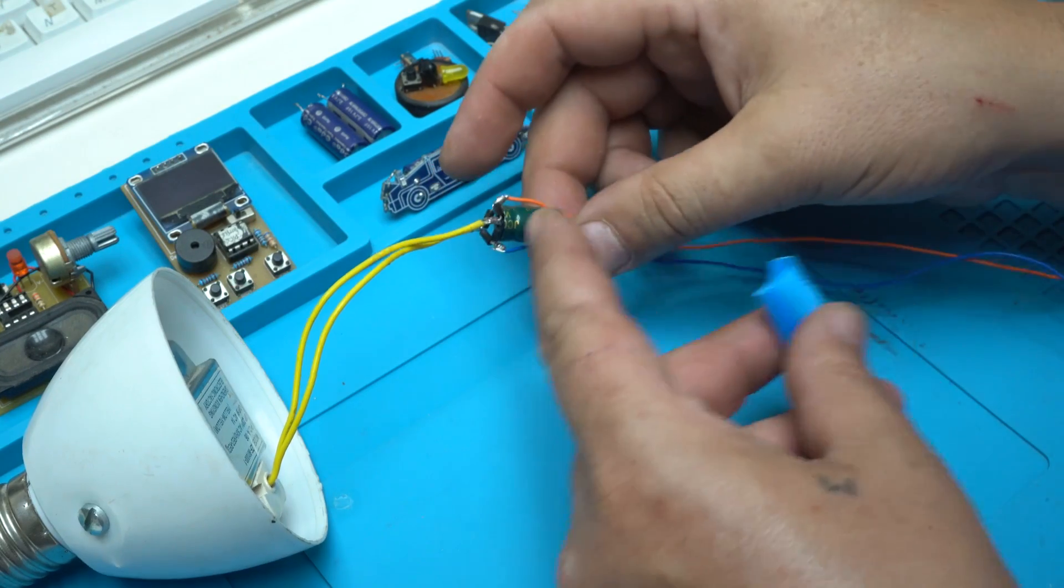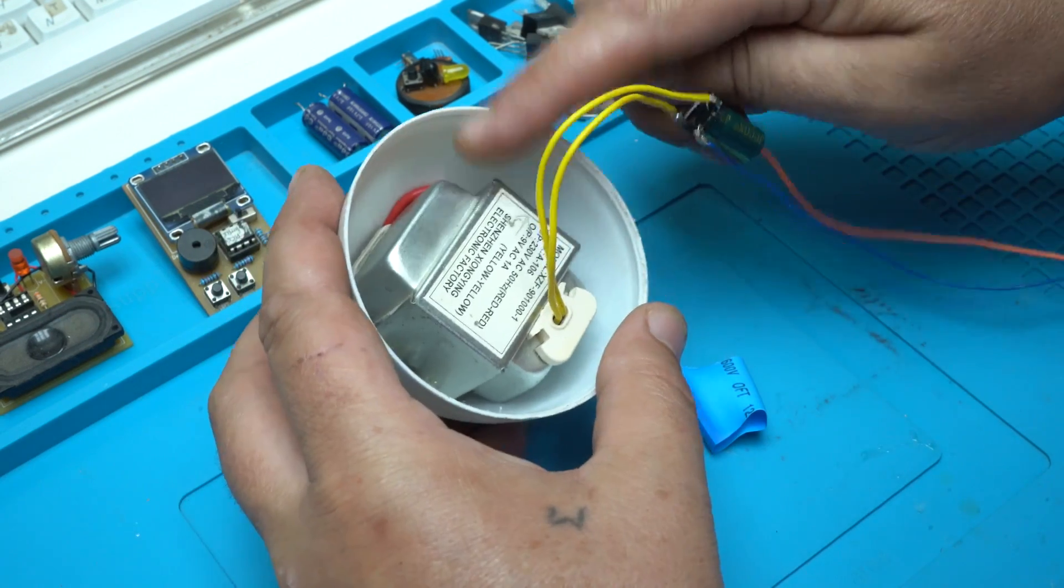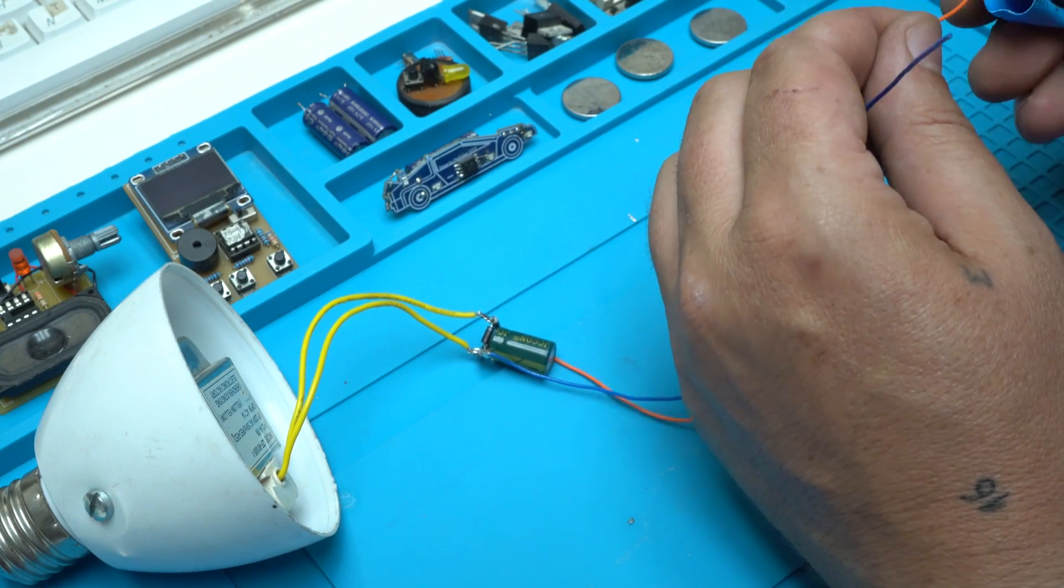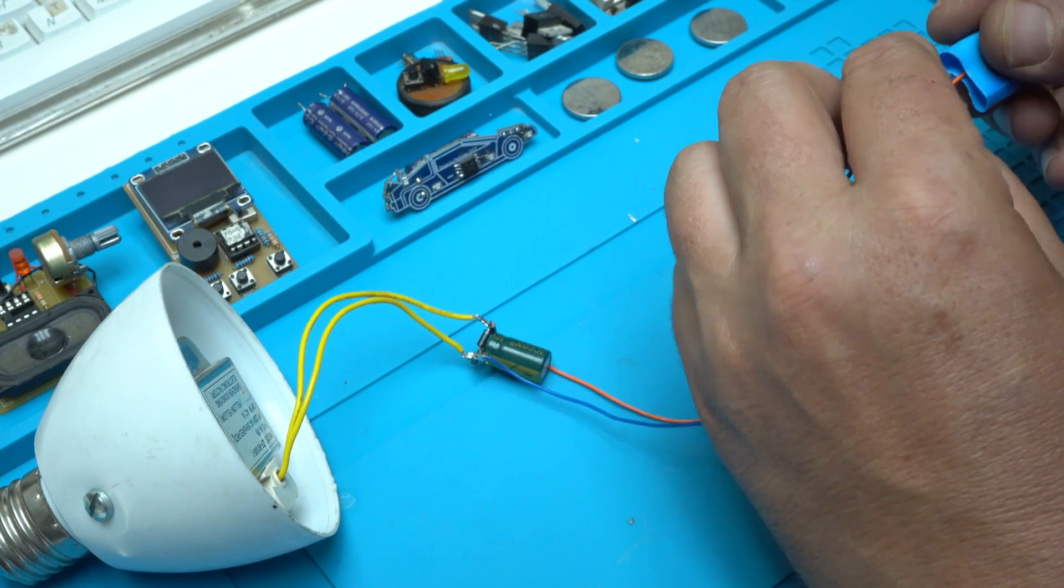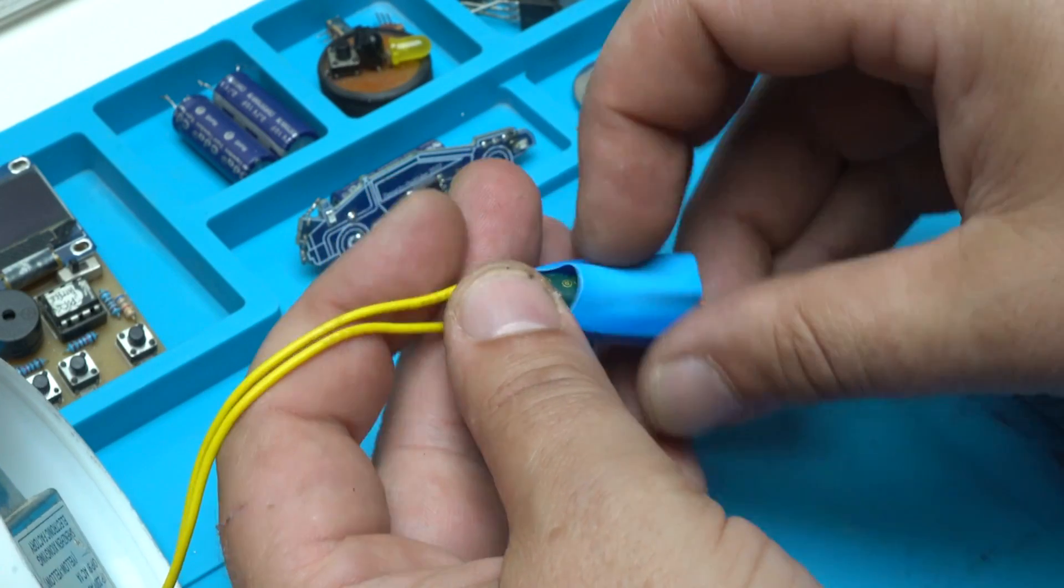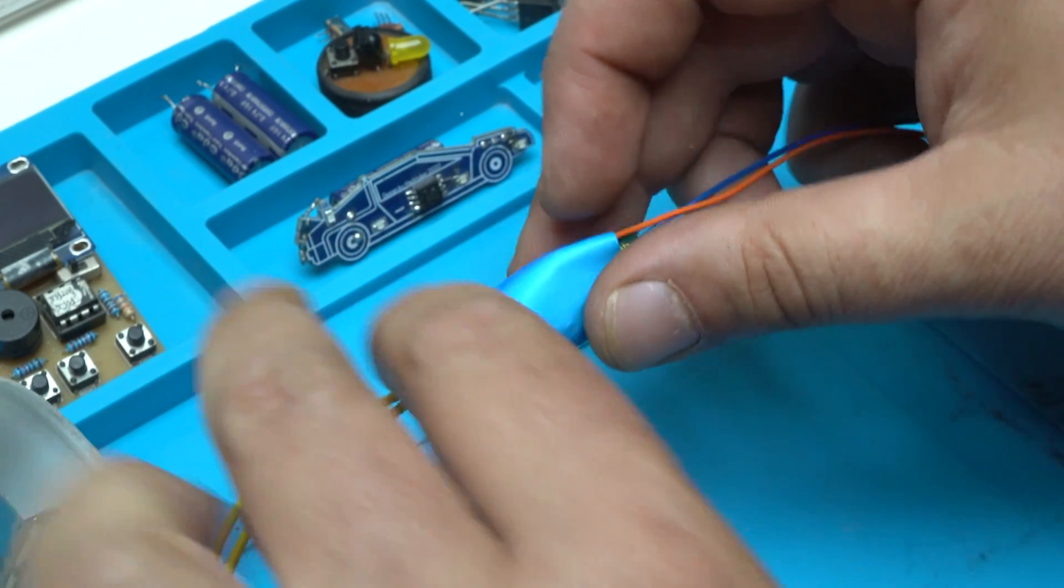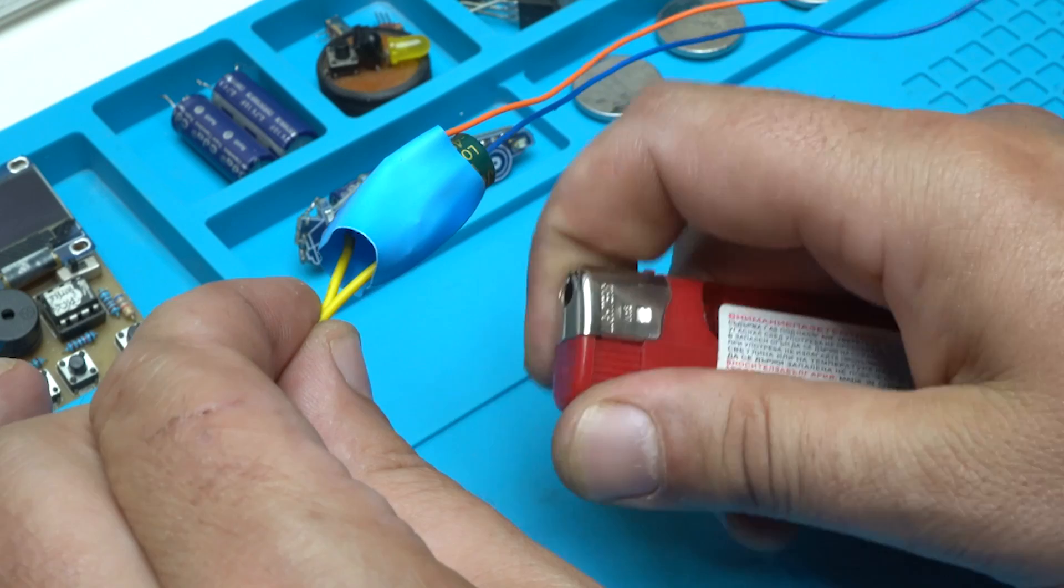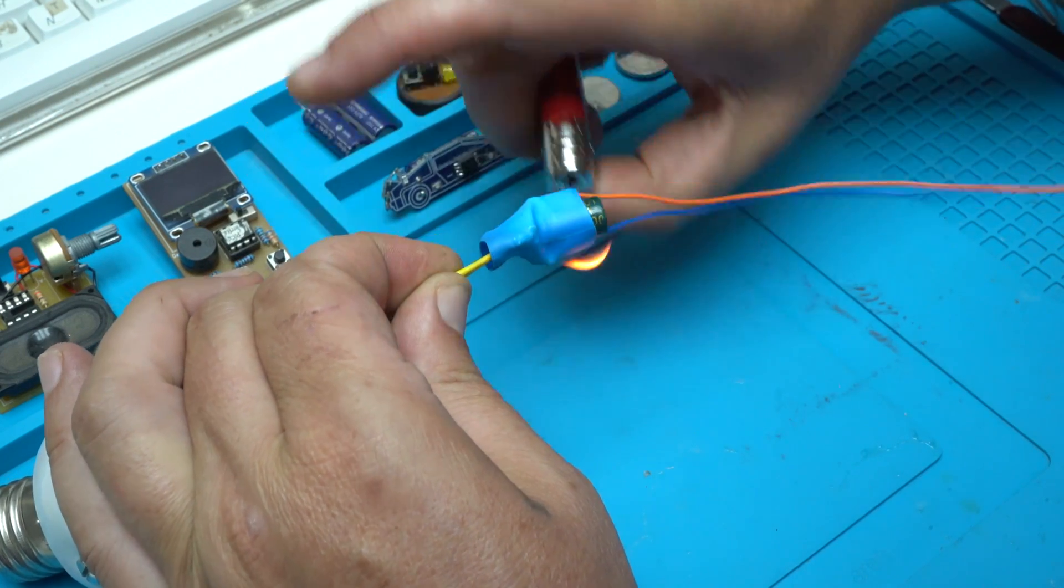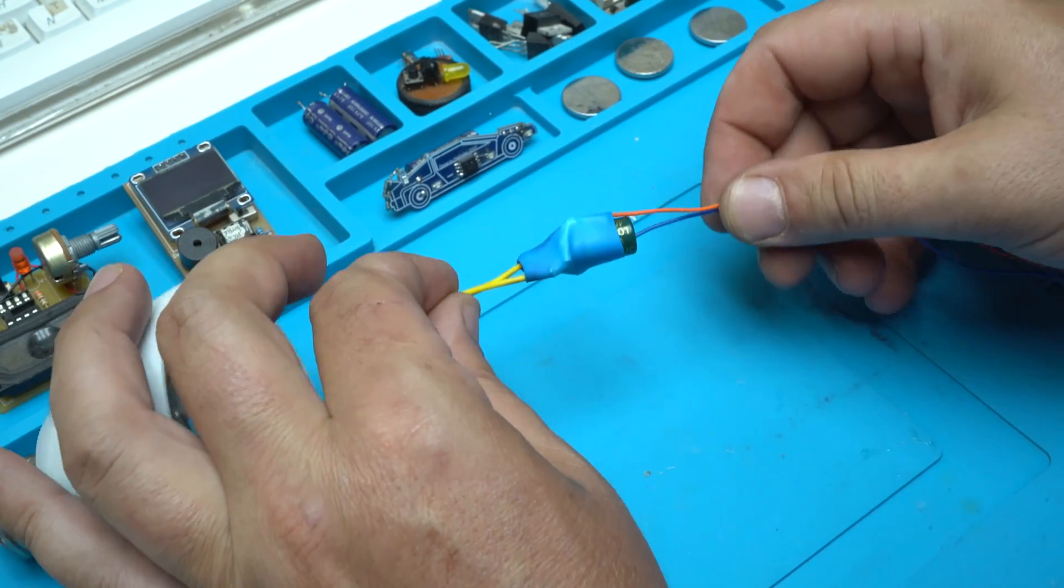I need to isolate the wires from touching the metal. That would be very dangerous. So I'm putting heat insulation like this. Great.